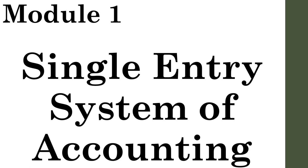Apart from that, we also dealt with various cases including preparation of the balance sheet. In the last session, we learned how to find net profit or net loss and finally prepare the final balance sheet — that was the first case. I mentioned that there are two methods: the statement of affairs method, which we have learned, and the second one, the conversion method. So let us discuss the second case in detail.